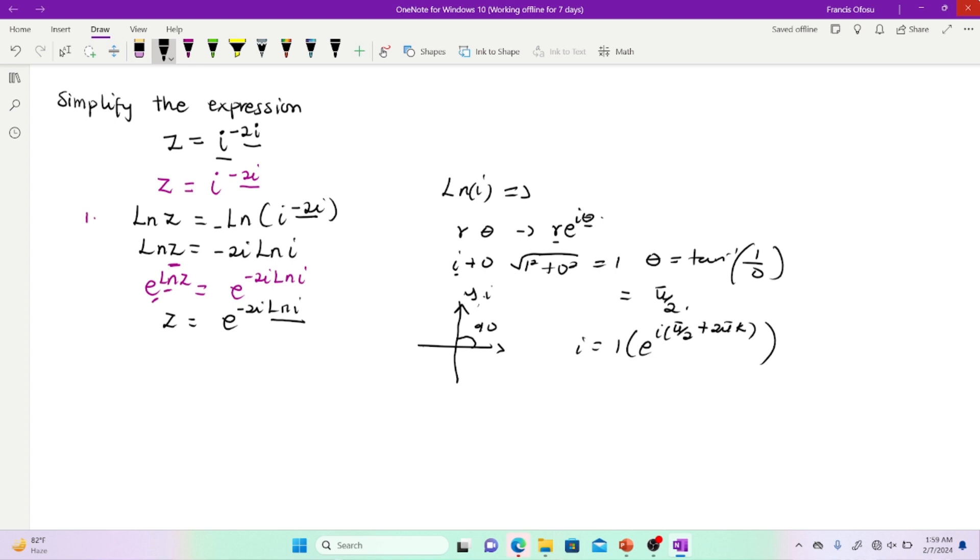For that reason, I'm going to have this expression ln i to be equal to ln of the expression e to the power i open brackets. Then this one will follow, 2πk plus π on 2.